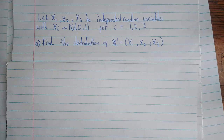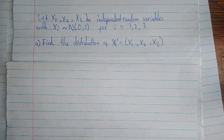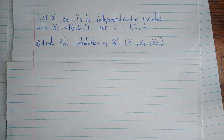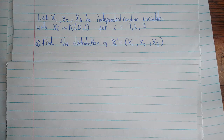Hi guys, so today I'm taking you through this question from univariate to multivariate. The question says: let x1, x2, x3 be independent random variables with xi following a normal distribution with mean 0 and variance equal to 1.